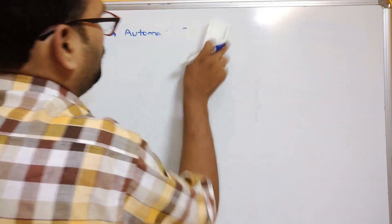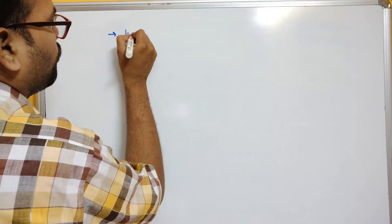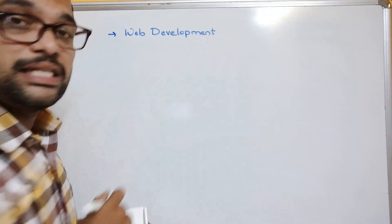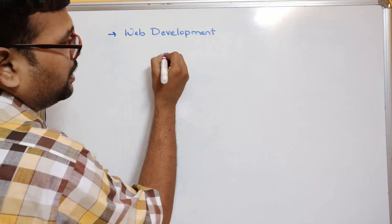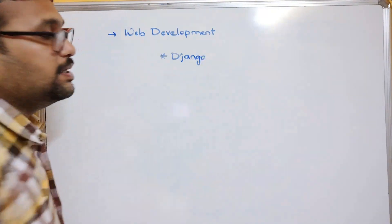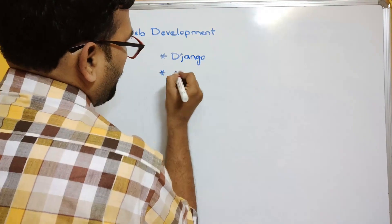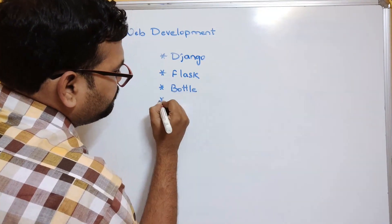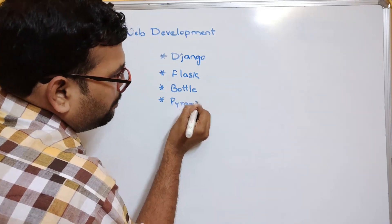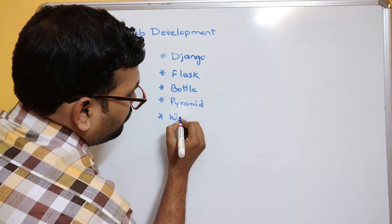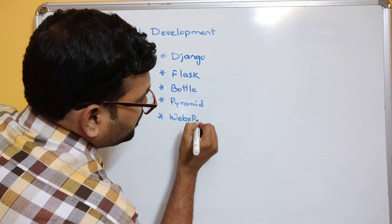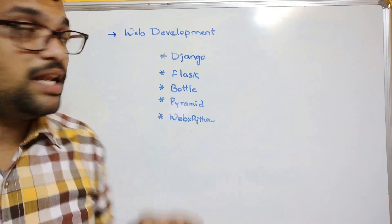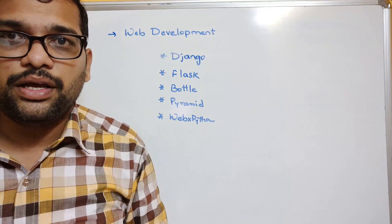For web development — creating web applications — the major libraries and frameworks are: Django, Flask, Bottle, Pyramid, and web.py. There are many libraries available for web development to create web applications.